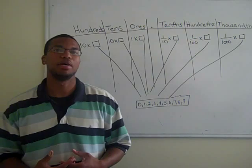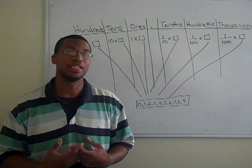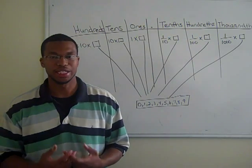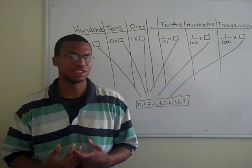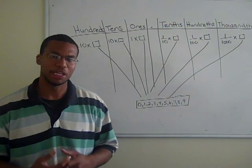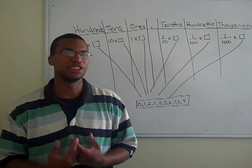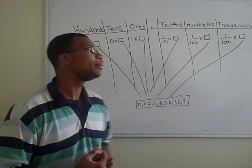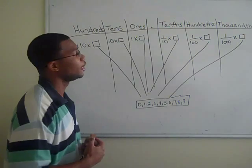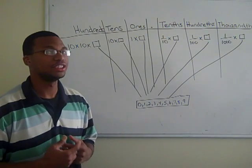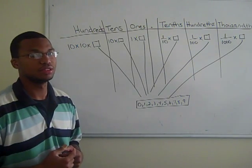First I will start out by talking about the decimal numeral system. The decimal numeral system is a number system that's based off the number 10. Behind me is a place value chart which shows the representation of this.